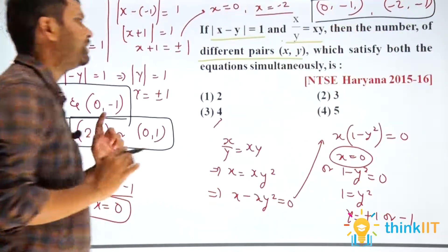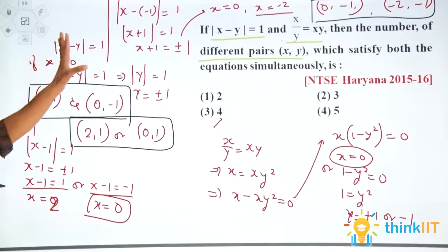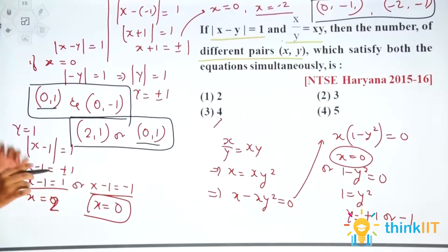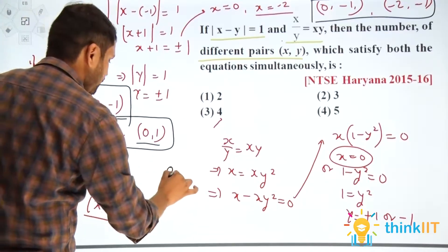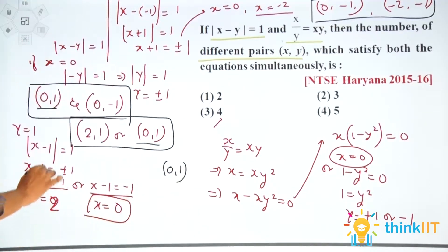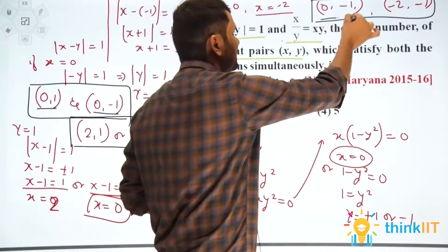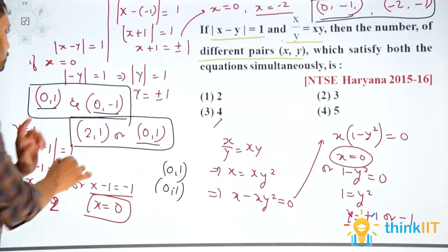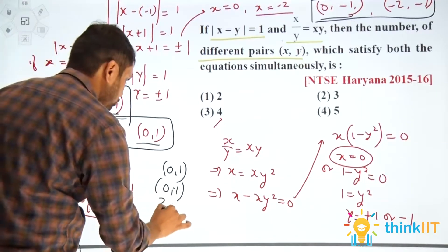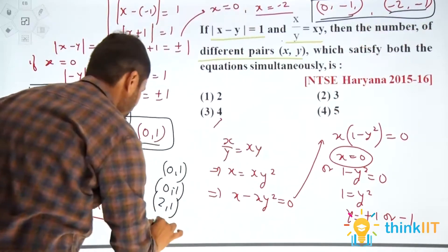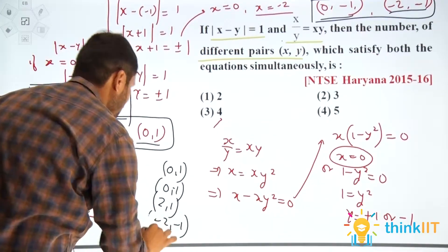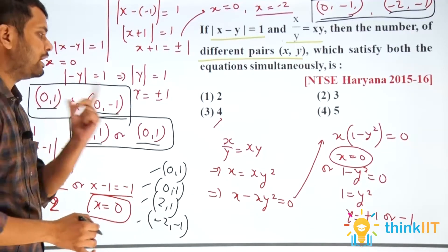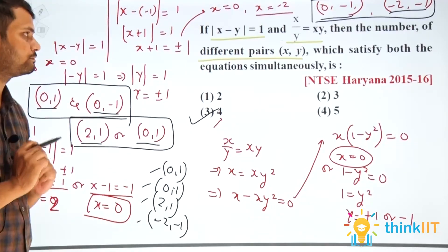Now let's count the unique solutions. From x equals 0: (0, 1) and (0, −1). From y equals 1: (0, 1) and (2, 1) — but (0, 1) is already counted. From y equals minus 1: (0, −1) and (−2, −1) — but (0, −1) is already counted. The distinct pairs are: (0, 1), (0, −1), (2, 1), and (−2, −1). So the number of solutions is 4, and the answer is the third option: 4. Thank you.